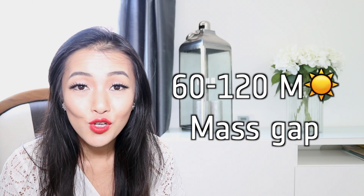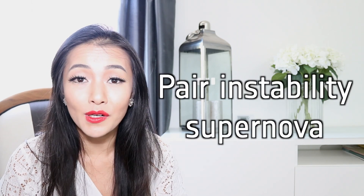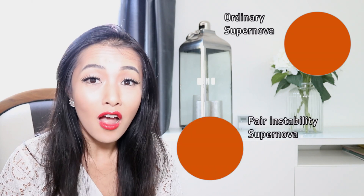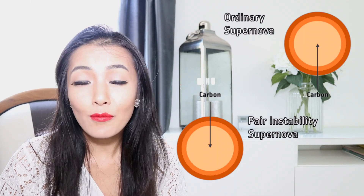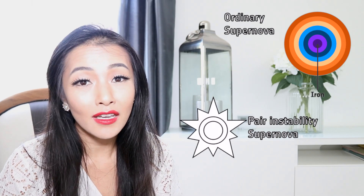Additionally, another mass gap exists in the higher mass range of black holes, between 60 and 120 solar masses, and it's also believed to be due to differences in the supernova mechanism. They call it the pair instability supernova. This kind of supernova occurs when the core collapse of a dying star releases gamma ray radiation and produces particle and antiparticle pairs. These pairs then form a thermonuclear explosion that completely annihilates the star, leaving nothing behind.